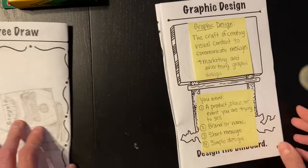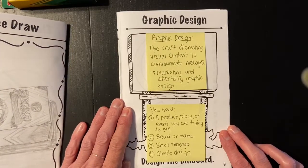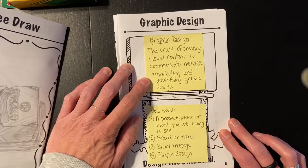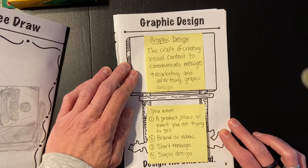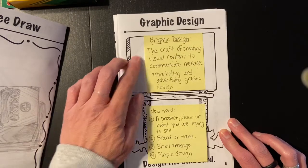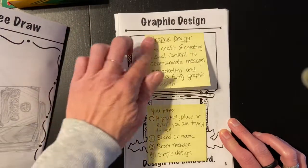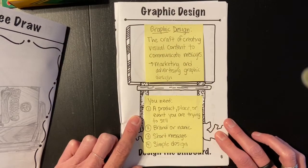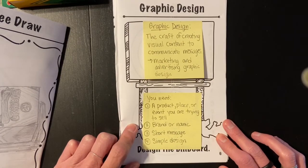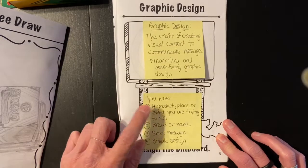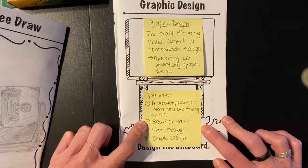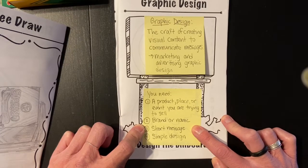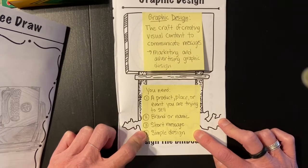Now for your billboard design — this is graphic design. I gave a quick definition: graphic design is the craft of creating visual content to communicate messages. This is marketing and advertising graphic design, for a product, a place, or event you are trying to sell. Usually on a billboard you see somebody trying to sell something or there's a special event. Come up with a brand or name for your item or event, put a short message — billboards are short because you're driving by — and come up with a simple design that catches your eye.